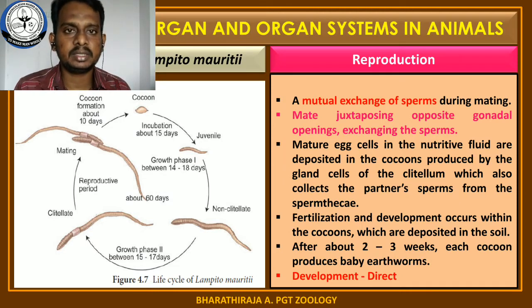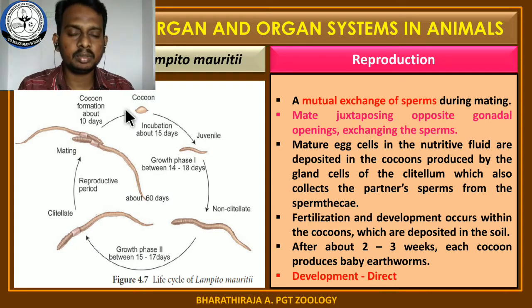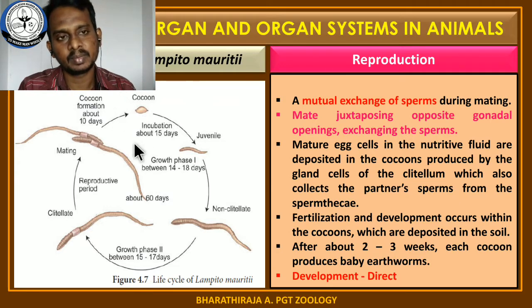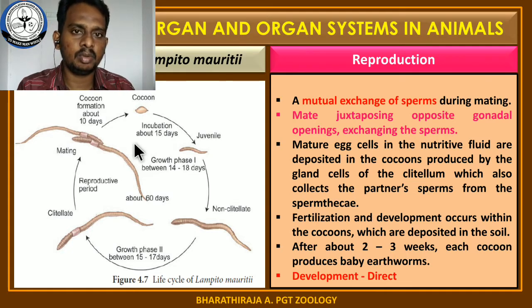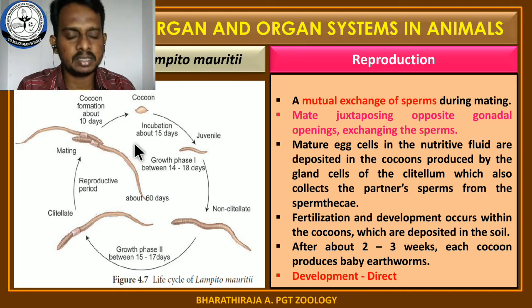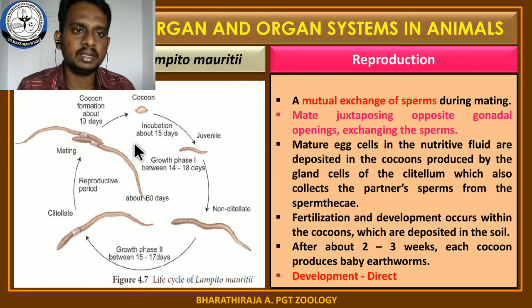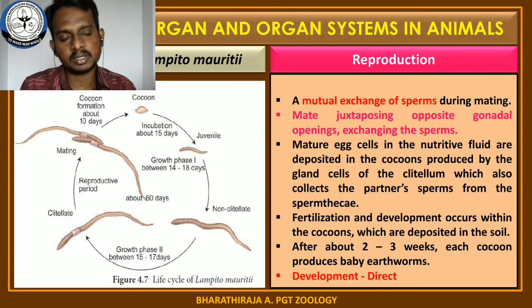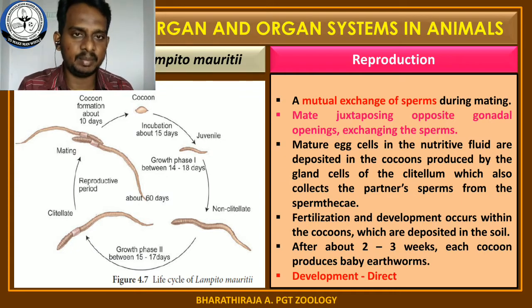Earthworms are hermaphrodite animals. Hermaphrodite means both male and female reproductive organs are found in a single body — they are monoecious. Even so, self-fertilization is avoided in this animal because of a process called protandry. Protandry means maturation of male gametes earlier than the female gametes.